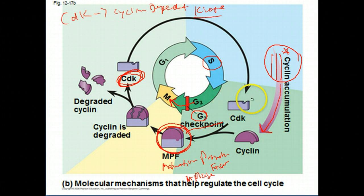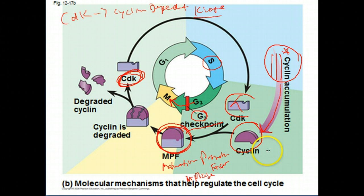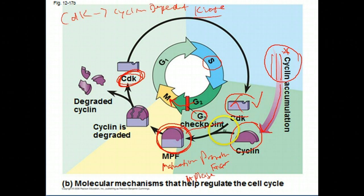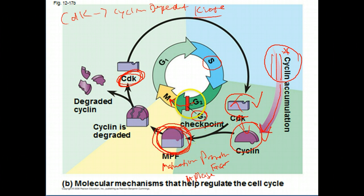Cyclin-dependent kinase is always present. If you don't have enough cyclin, basically you're saying that the process should not proceed because the cell is not physiologically in a state to perform cell division accurately and faithfully. Cyclin-dependent kinases are always present — it's the cyclins that are regulated. Once you get enough cyclins accumulated, this complex will form, forming MPF. MPF gets you over this G2 checkpoint and into mitosis.